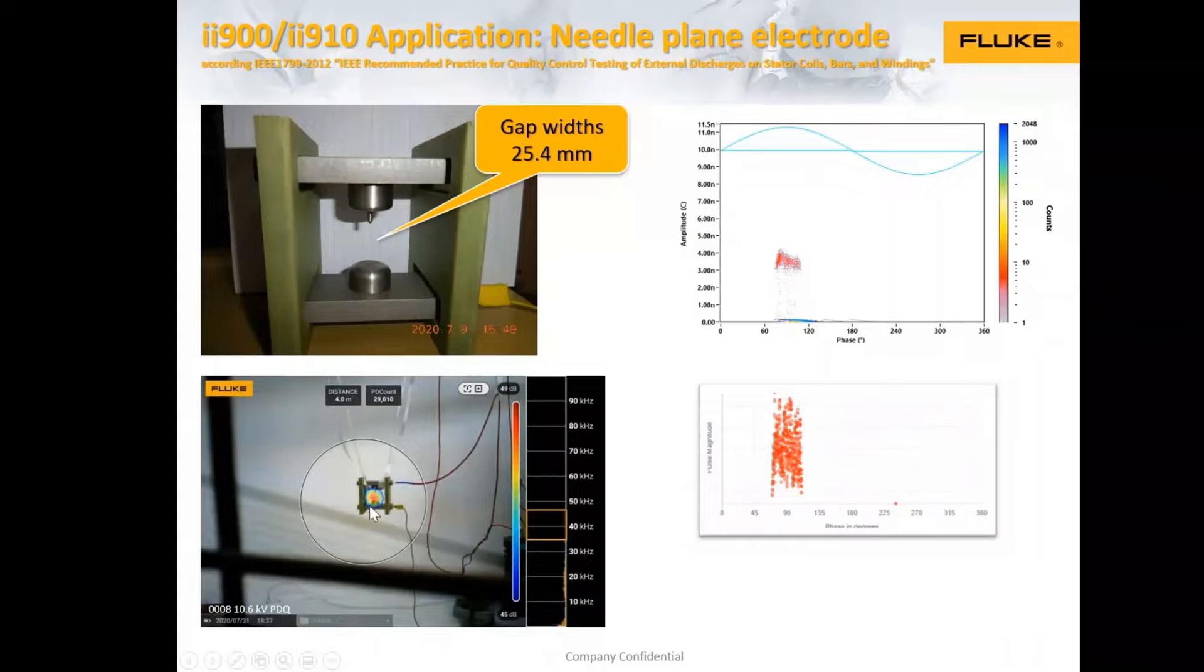We could see partial discharges here. The conventional PD tester is showing that pattern. It's a so-called PRPD pattern, phase resolved partial discharge pattern with the phase angle here, magnitude here, and the current in set direction. And this one here is generated by the Fluke camera, and it's the ideal example because both are on the same phase position.